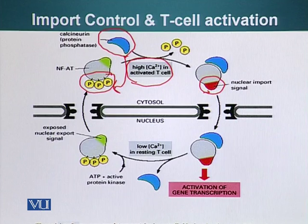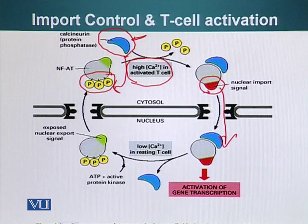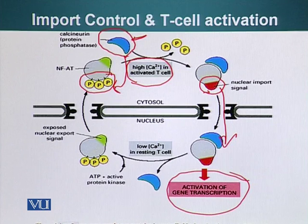In its inactive form, NFAT is phosphorylated. Once the activation signal has been received, it becomes dephosphorylated by the action of calcineurin. When the nuclear import signal is exposed, this allows NFAT to be imported into the nucleus, where it results in activation of gene transcription, which will ultimately result in activation of that particular T cell.